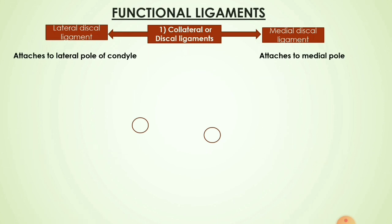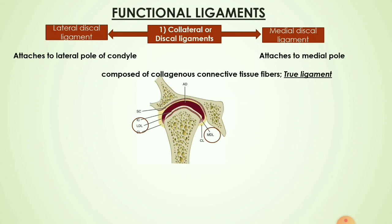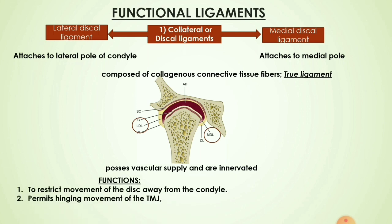The lateral discal ligament attaches to the lateral pole of the condyle, whereas the medial discal ligament attaches to the medial pole. They are composed of collagenous connective tissue fibers, hence they are known as true ligaments of the TMJ. They possess vascular supply and are innervated. Their function is to restrict the movement of the disc away from the condyle, and they also permit the hinging movement of the temporomandibular joint.